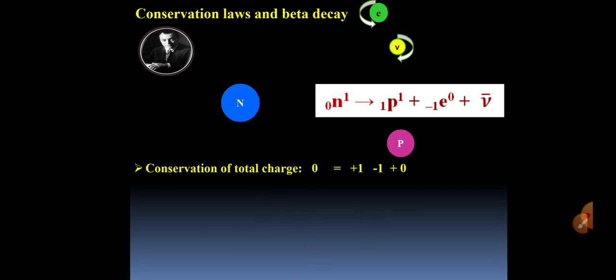Now let us see conservation laws. Firstly, conservation of total charge. We can see in this nuclear reaction that charge on a neutron is 0, charge on proton is +1, charge on electron is -1, and charge on neutrino was taken as 0.